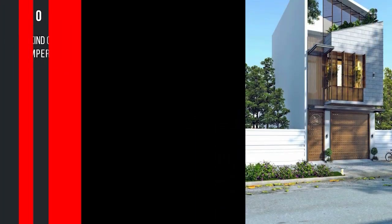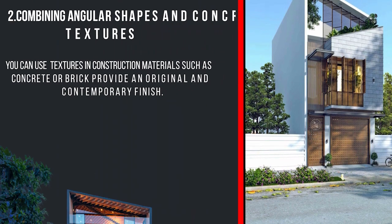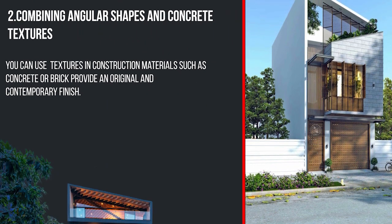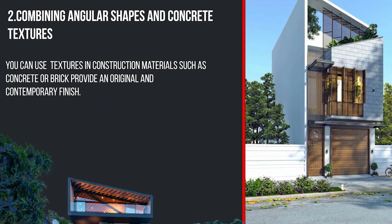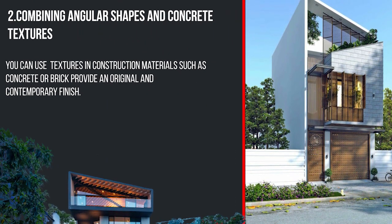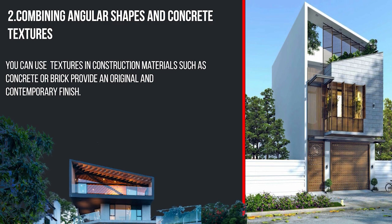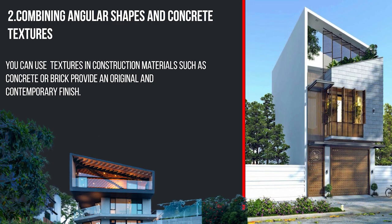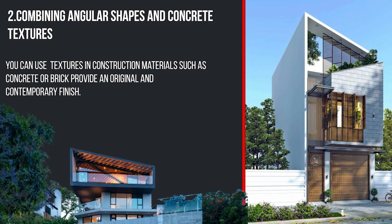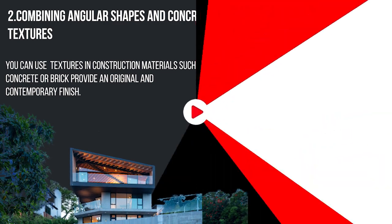The second type of elevation is combining angular shape and concrete texture. You can use texture in construction materials such as concrete or brick to provide an original and contemporary finish.